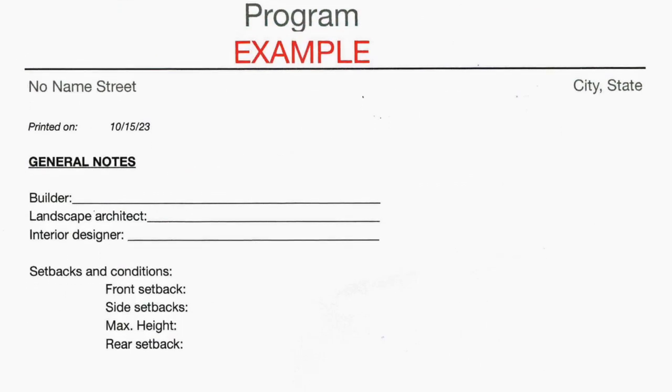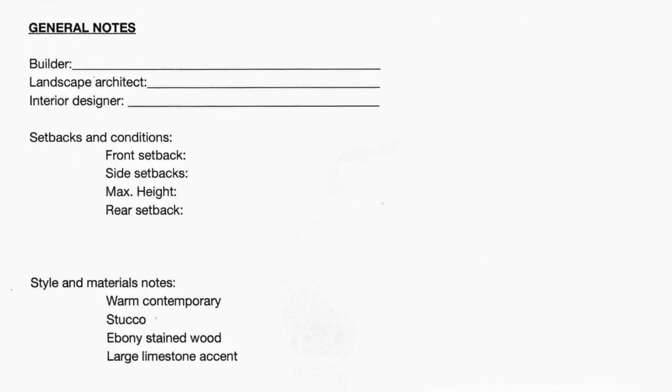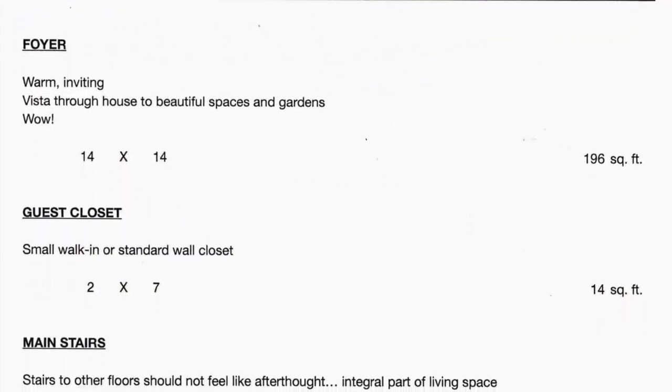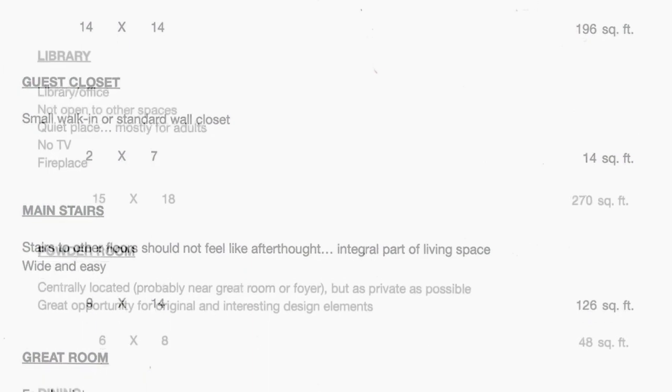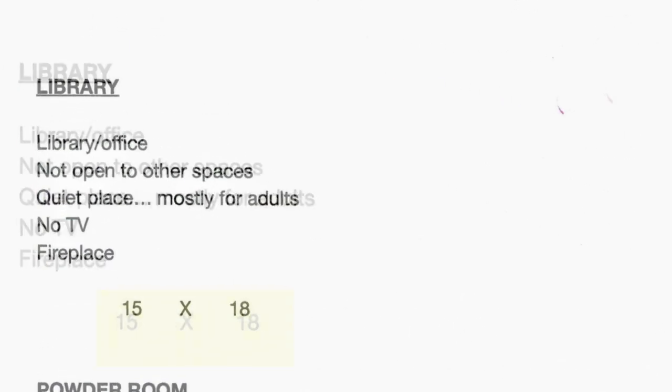Programs start with general information on zoning, style preferences, exterior materials, and colors. Room sizes are automatically calculated as square footage. This is easily changeable as more input is provided by the client. Finally, floor areas are totaled. If any of the numbers are outside of the client's square footage budget, the program can be adjusted accordingly.